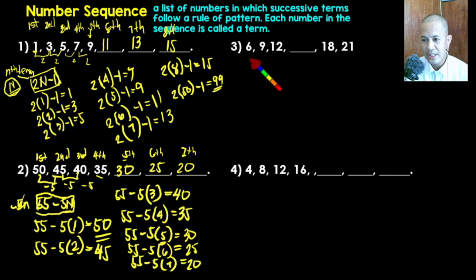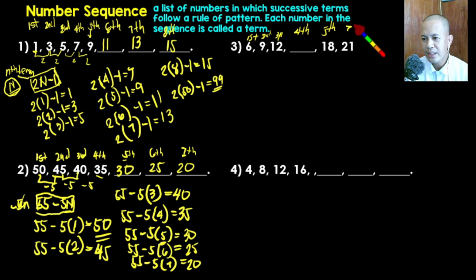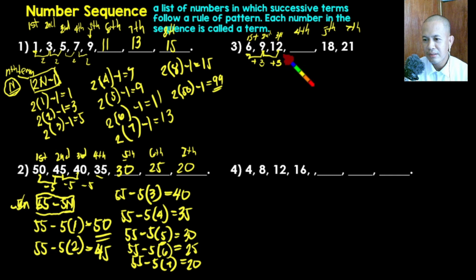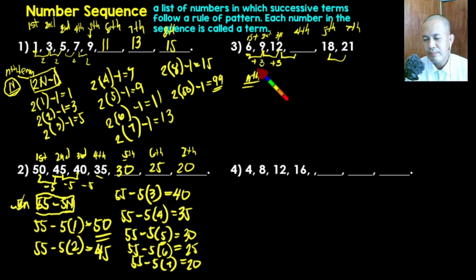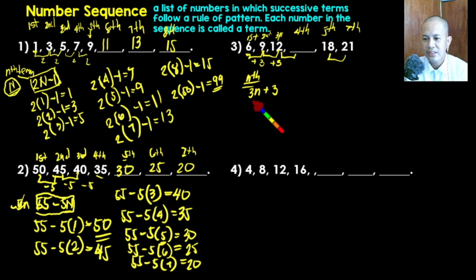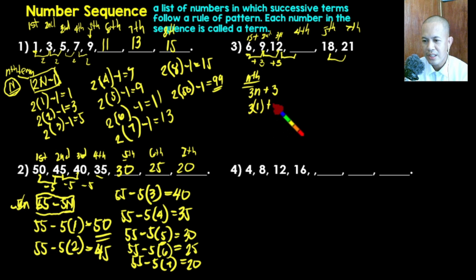Let's continue with example three. We have the first, second, third terms, then the fourth term is missing, and we have the fifth and sixth terms. Observing: six becomes nine — add three; nine becomes twelve — add three, and so on. Finding the formula using trial and error: we try three times n plus three. For the first term, n equals one: three times one plus three equals six. That gives us the correct first term.